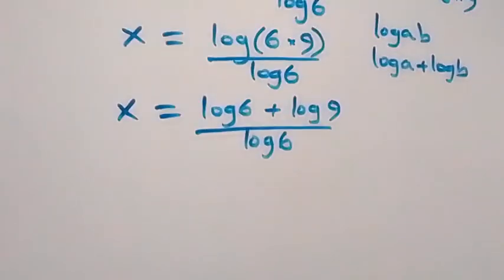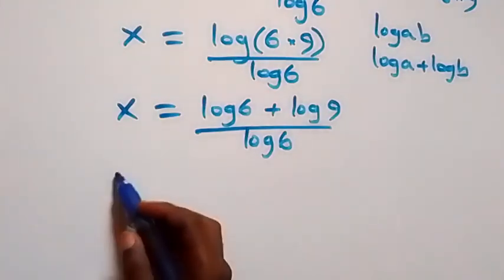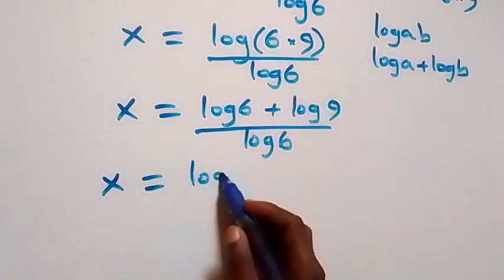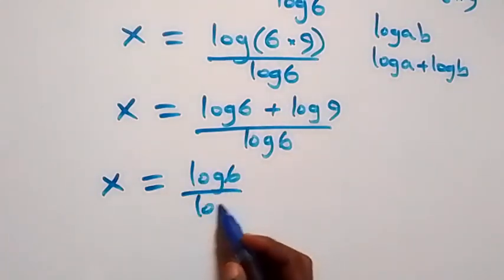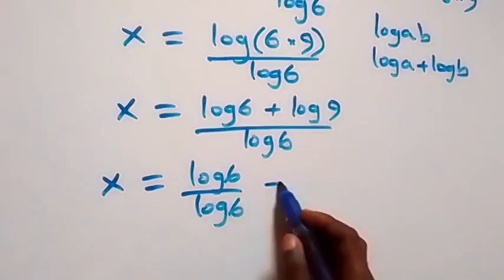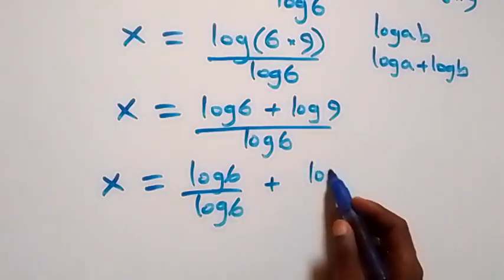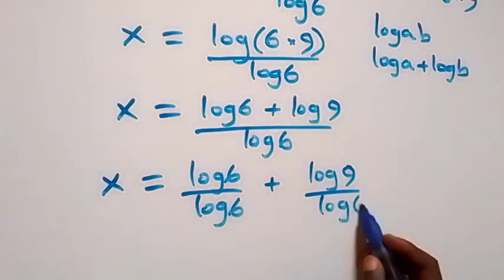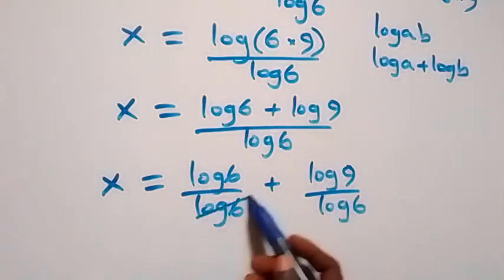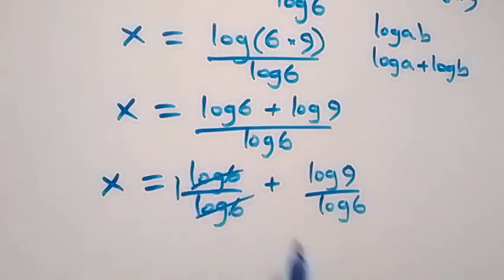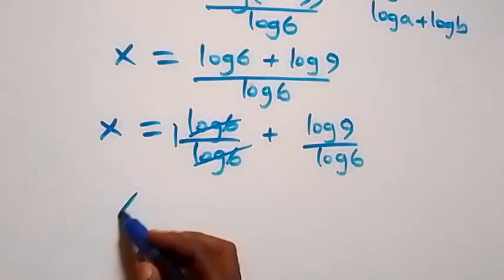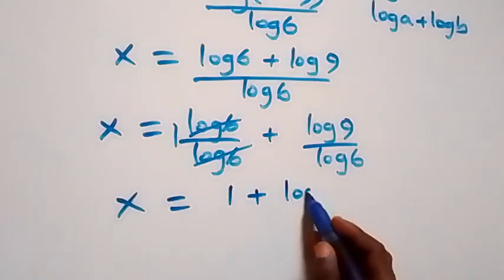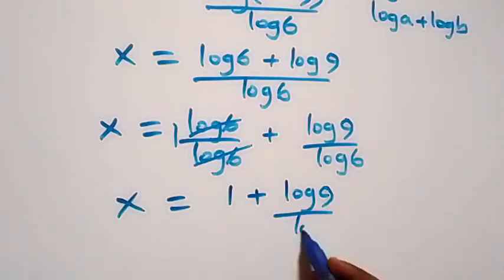We can separate this fraction into two fractions. This becomes x equals to log 6 over log 6, plus log 9 over log 6. Here, log 6 over log 6 cancels to give 1, so we have x equals to 1 plus log 9 over log 6.